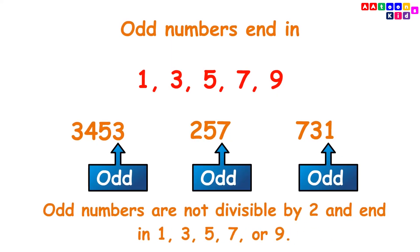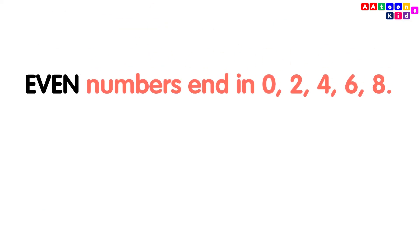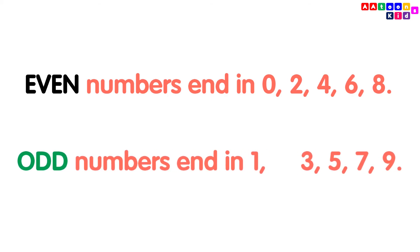Odd numbers are not divisible by 2 and end in 1, 3, 5, 7, or 9. Even numbers end in 0, 2, 4, 6, or 8, while odd numbers end in 1, 3, 5, 7, or 9.